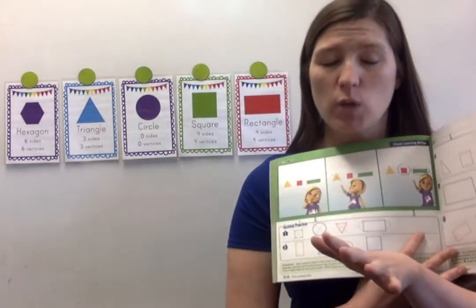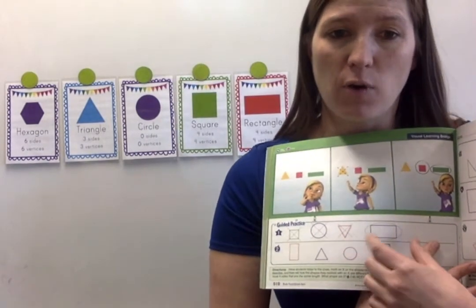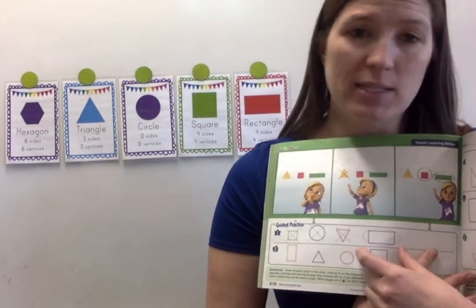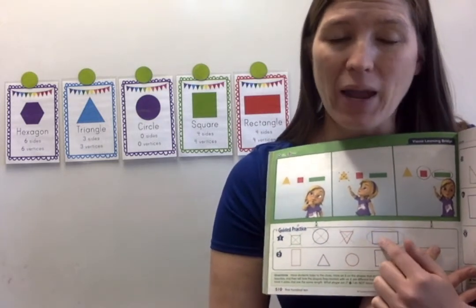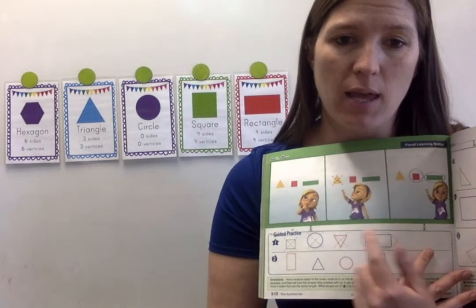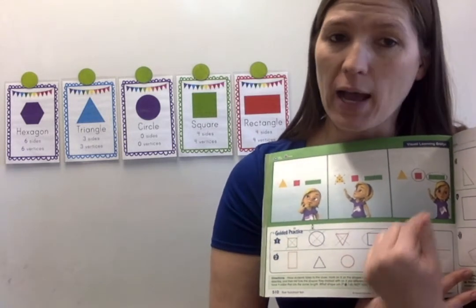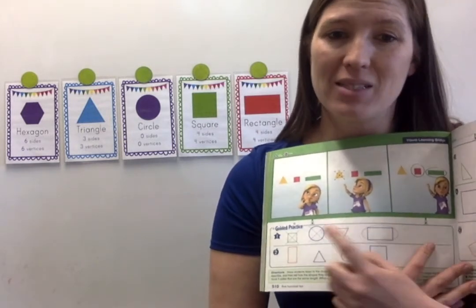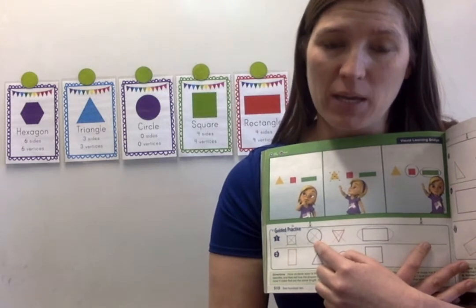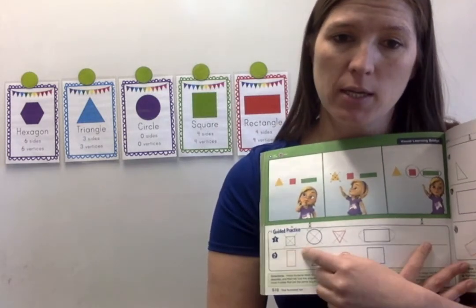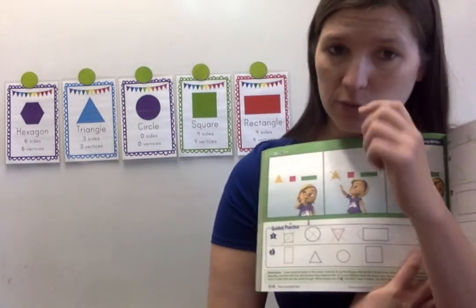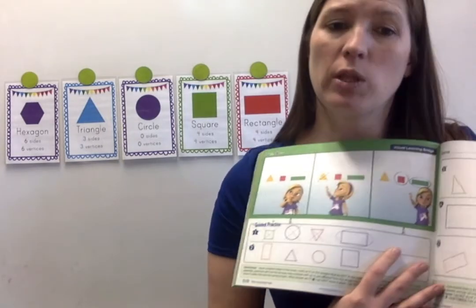So you would circle rectangle and cross out all the ones that do not fit the description of a four-sided shape with sides that are not all the same. And then you're going to tell your helper why a rectangle is different than one of the shapes over here. So I would say a rectangle is different from a circle because a rectangle has vertices and straight sides and a circle has none. That would be a difference. And then you'll continue with the clues.